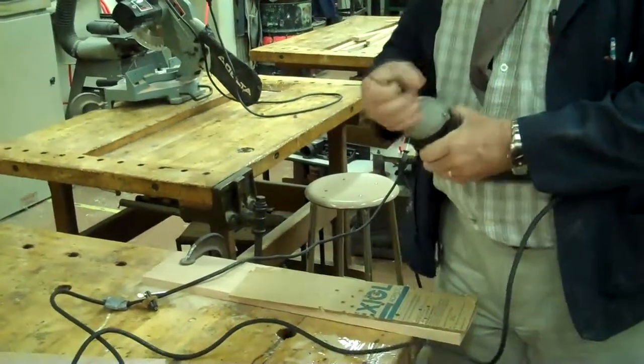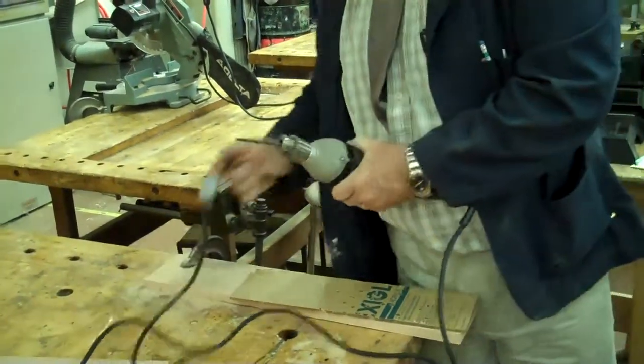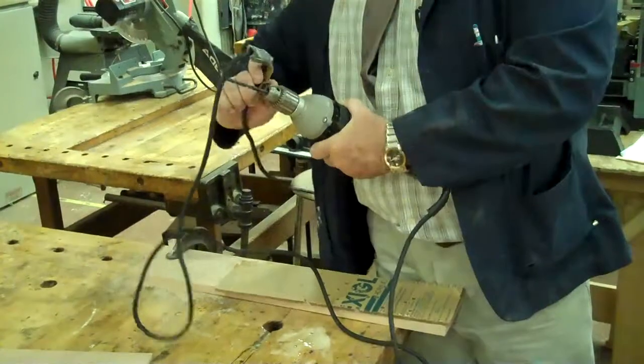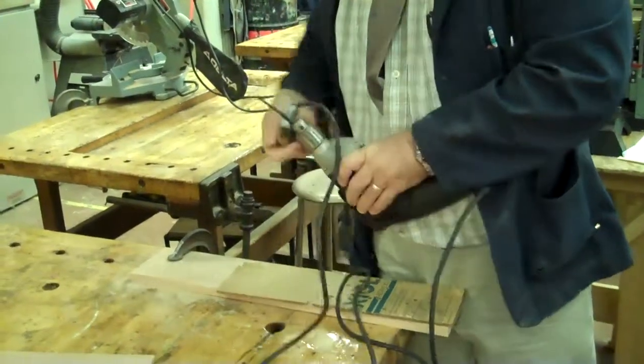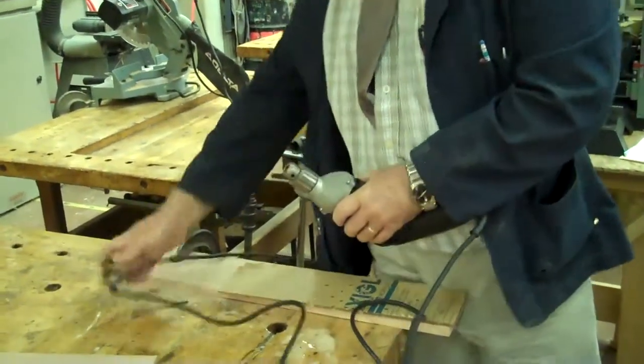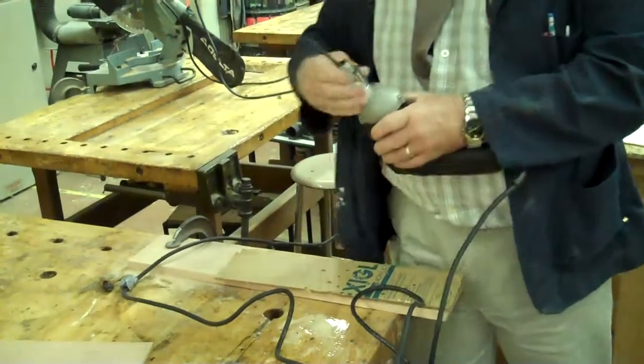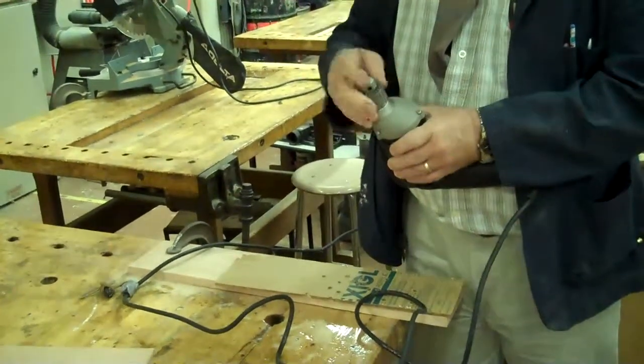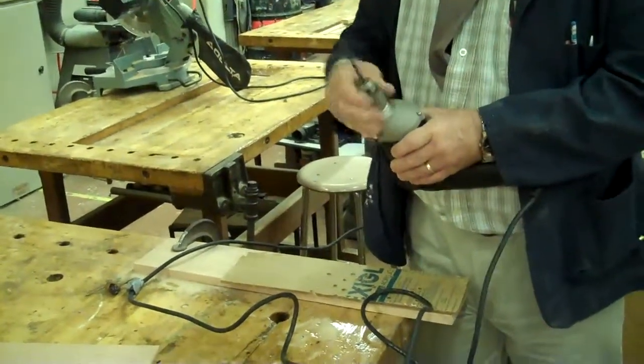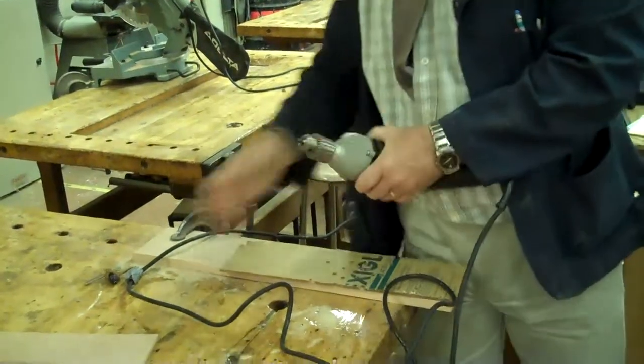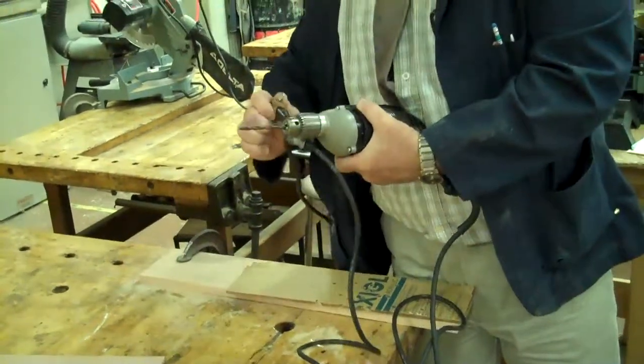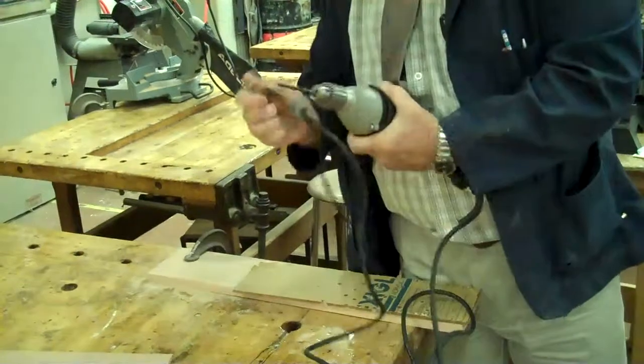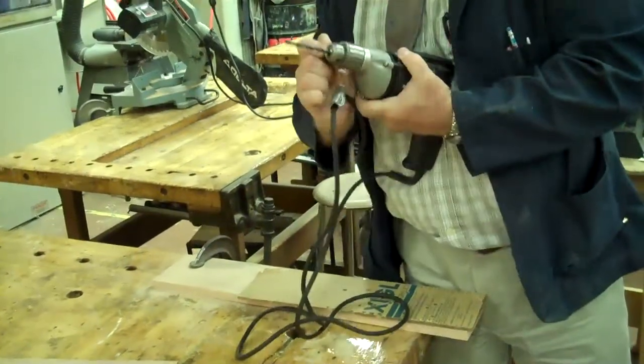We're going to put the geared chuck and put the chuck key in. We want to put the bit in so that it's locked and centered in here, and turn it by hand. Then take the chuck key, put it in here, and tighten the chuck.